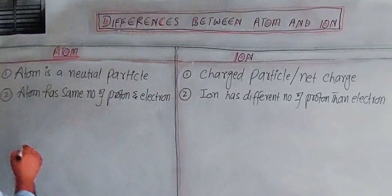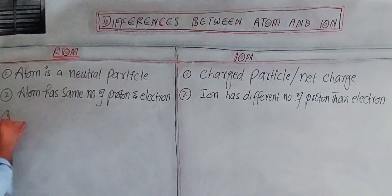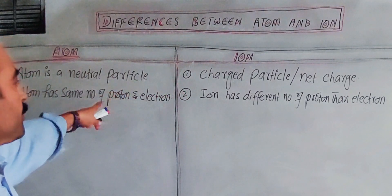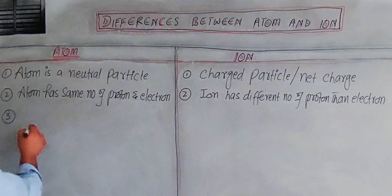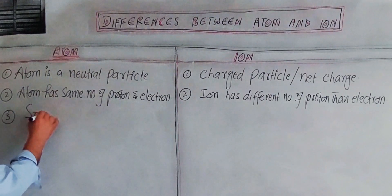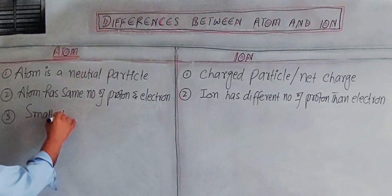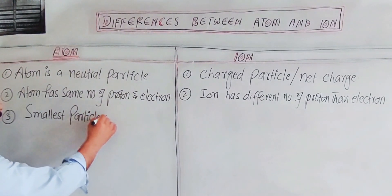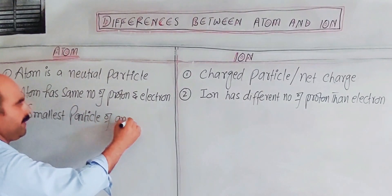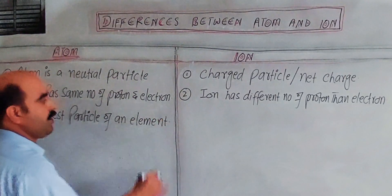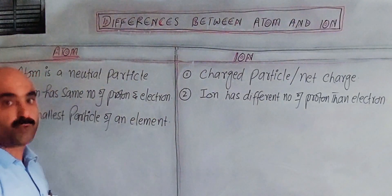Another difference is that an atom is the smallest particle of an element. The atom represents and retains the identity of that element.